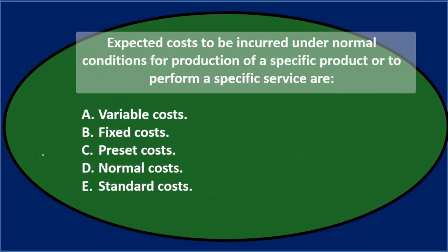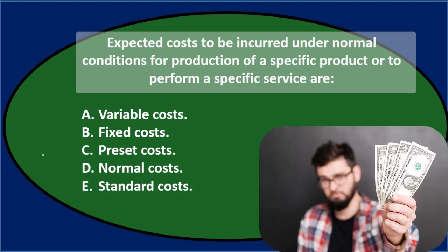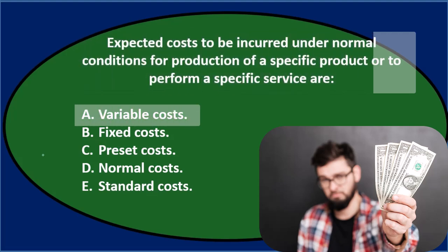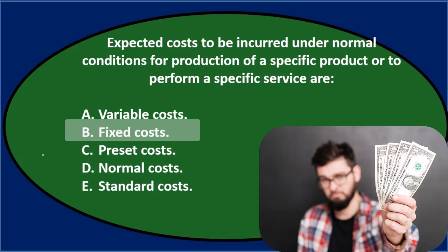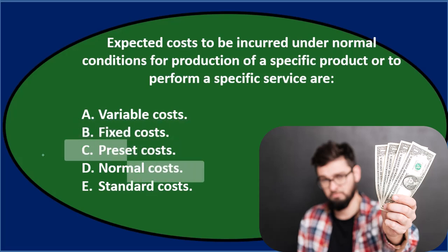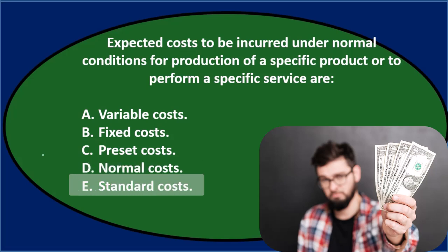Next question: Expected costs to be incurred under normal conditions for production of a specific product or to perform a specific service are — A. Variable costs. B. Fixed costs. C. Preset costs. D. Normal costs. Or E. Standard costs.